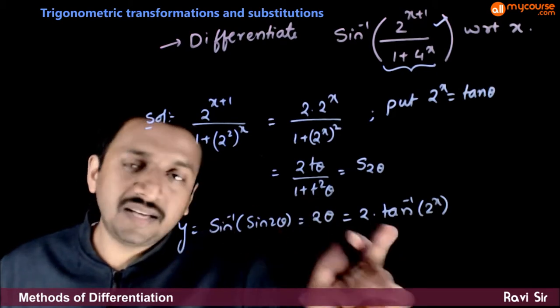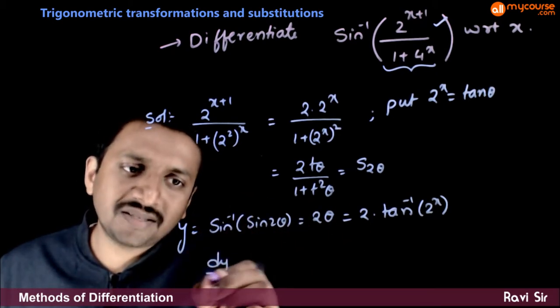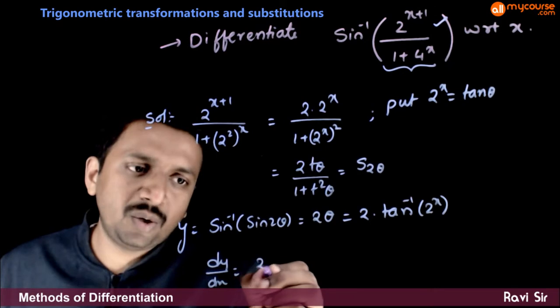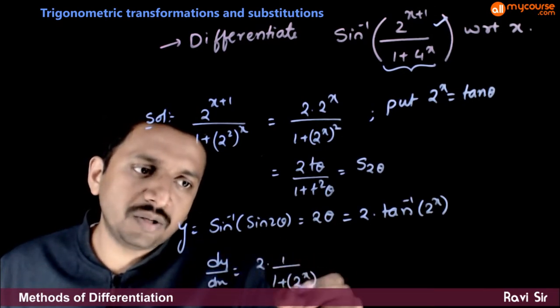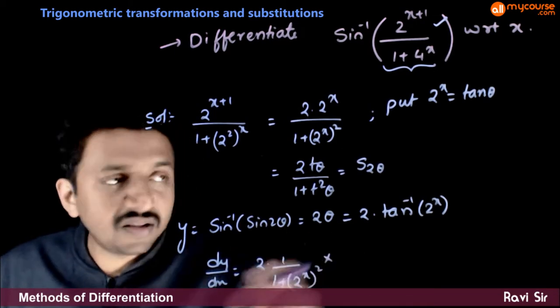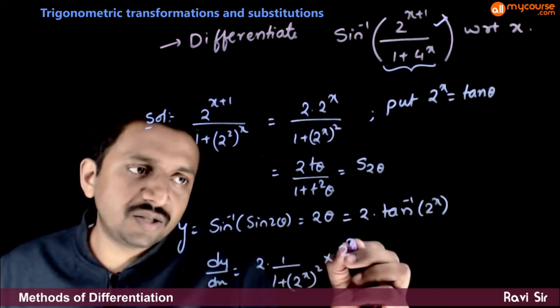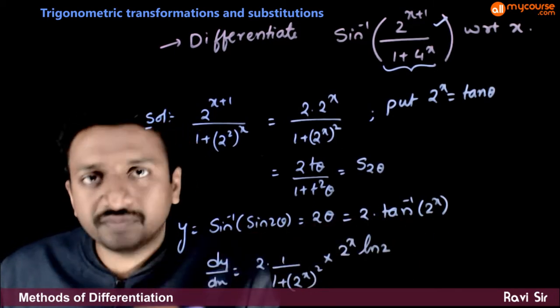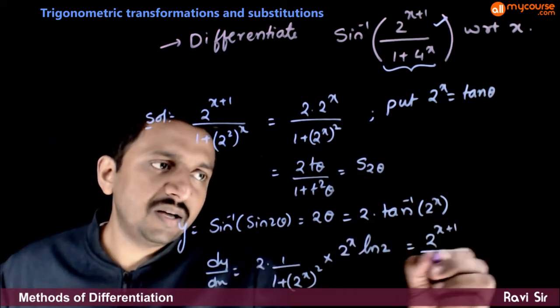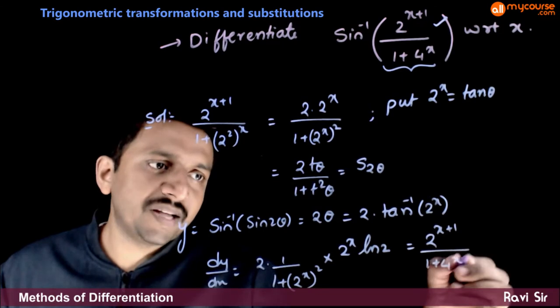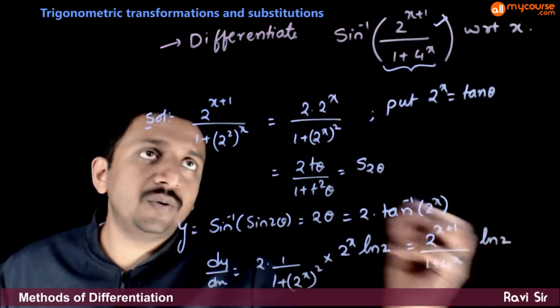So, y is equal to this. So, once you have this, dy by dx is nothing but 2 times 1 by 1 plus 2 power x whole square times 2 power x's differentiation is 2 power x ln 2. So, effectively it is 2 power x plus 1 by 1 plus 4 power x times ln 2.